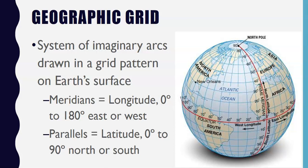Points on the earth's surface can be communicated by referencing points of latitude and longitude intersection. For example, Denver, Colorado's capital, is at 40 degrees north and 105 degrees west. Further accuracy can be achieved by dividing each degree into 60 minutes and each minute into 60 seconds.